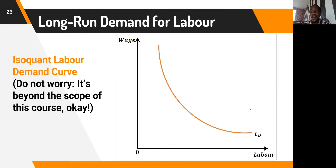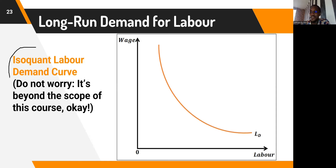We also have the long-run demand for labor, but that is beyond the scope of this course. It involves the iso-quant production function, which was covered in managerial economics. The discussion of the iso-quant labor demand curve will not be pursued further here.